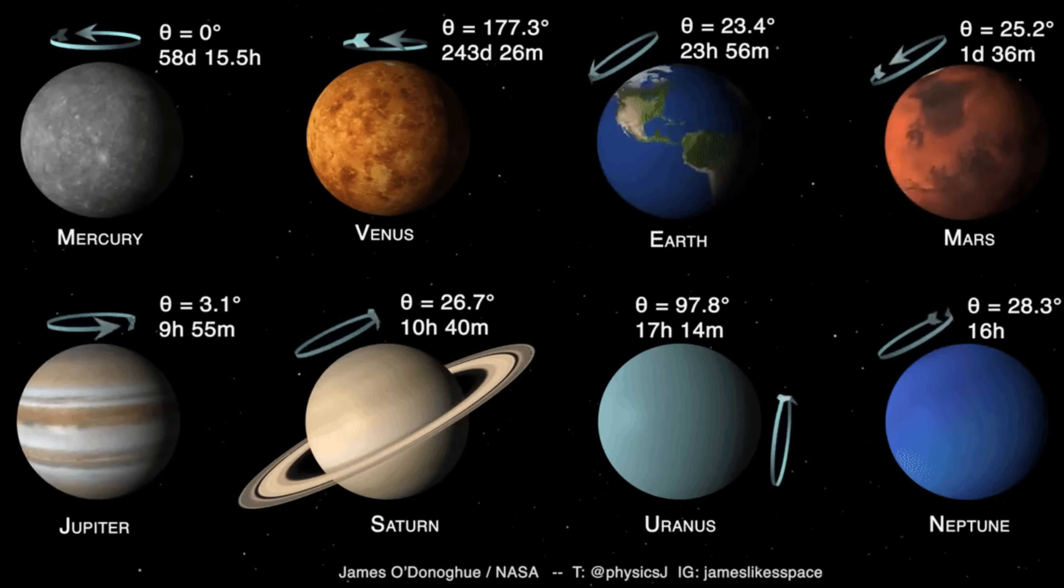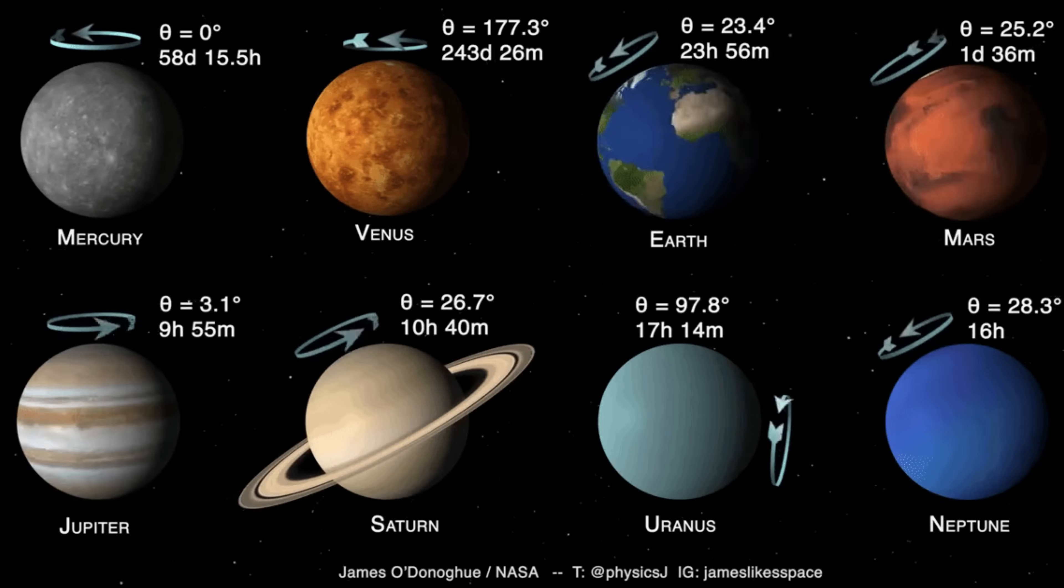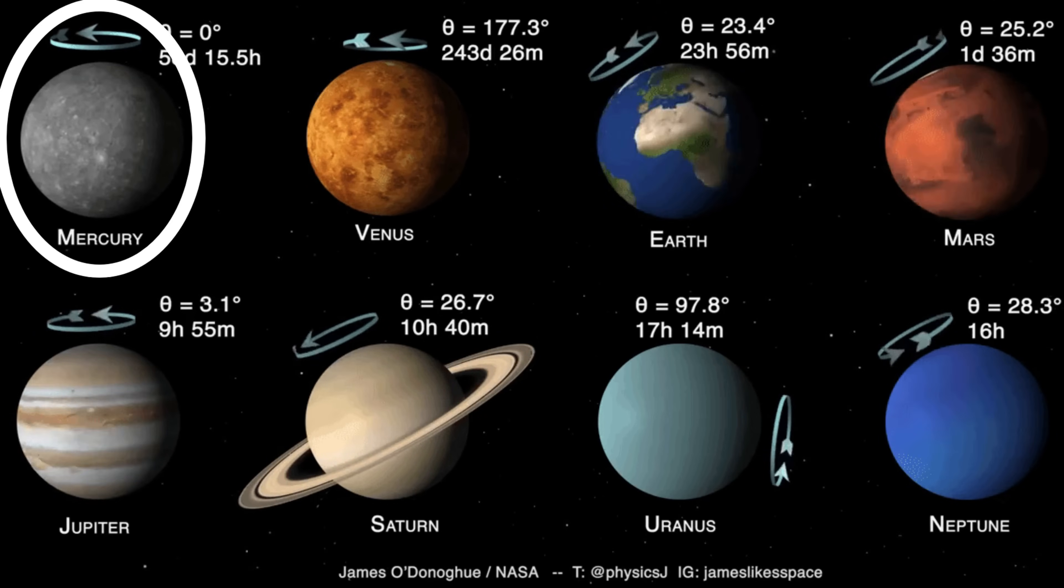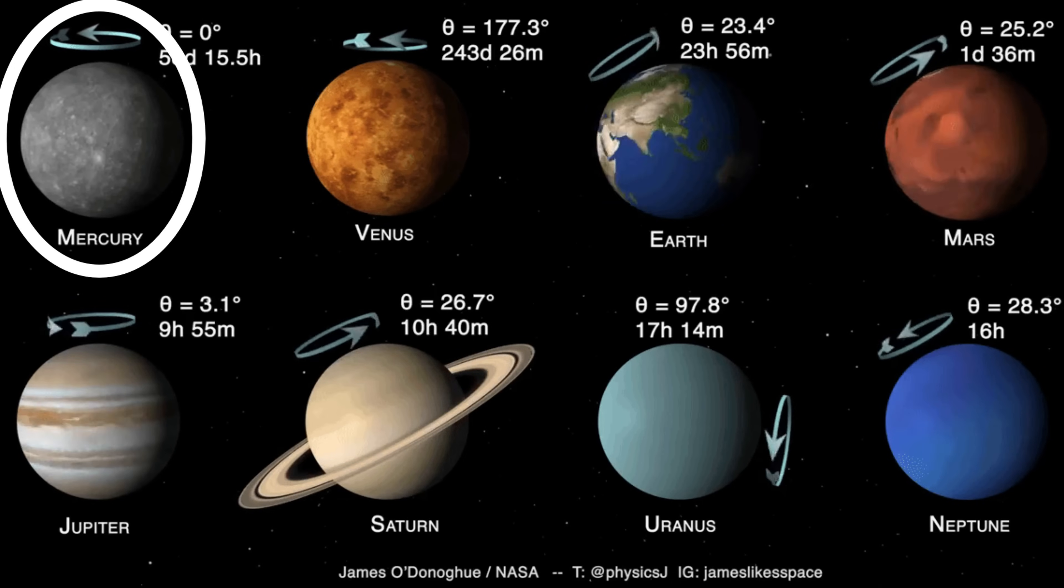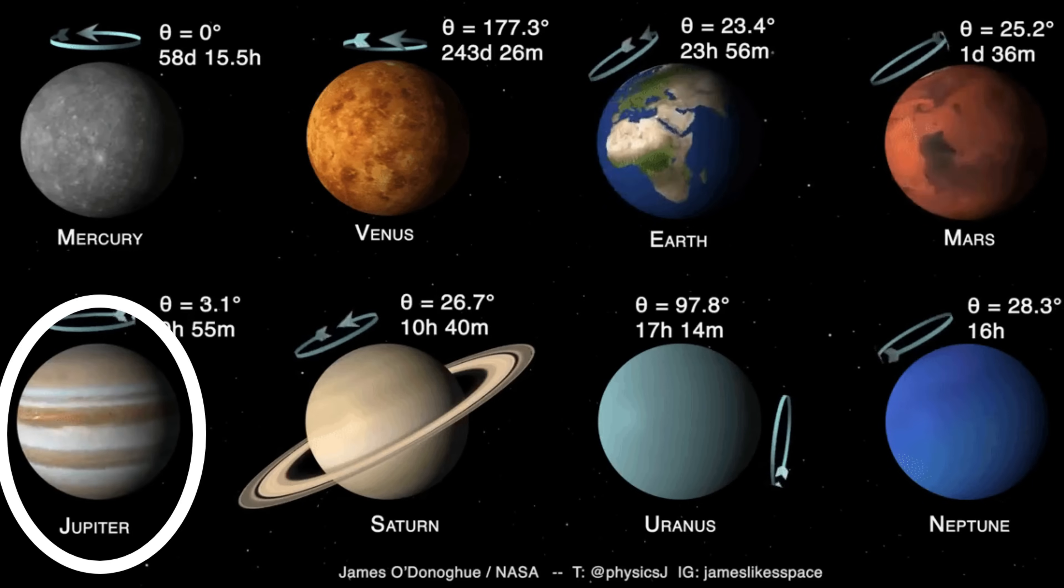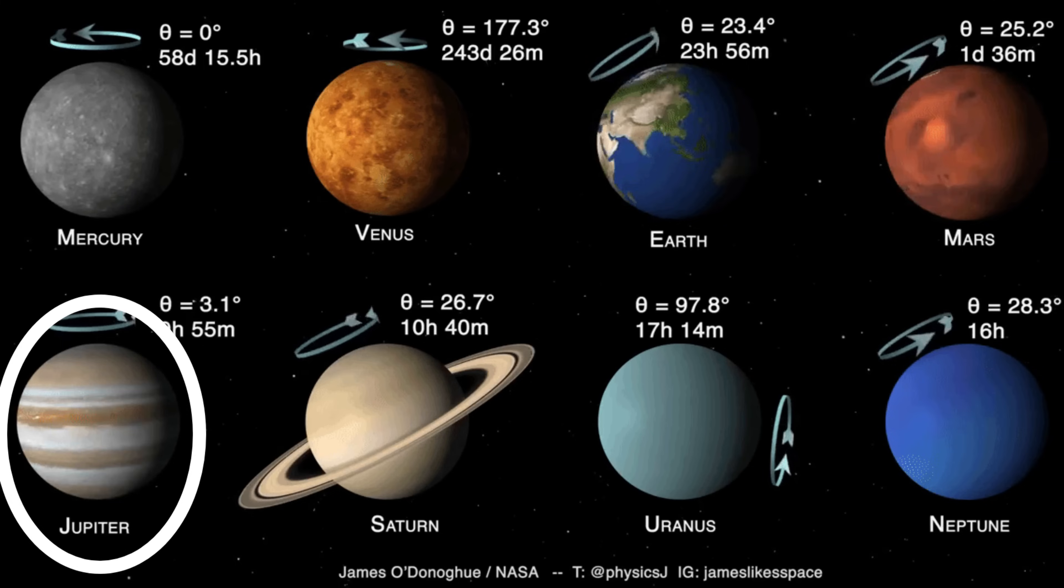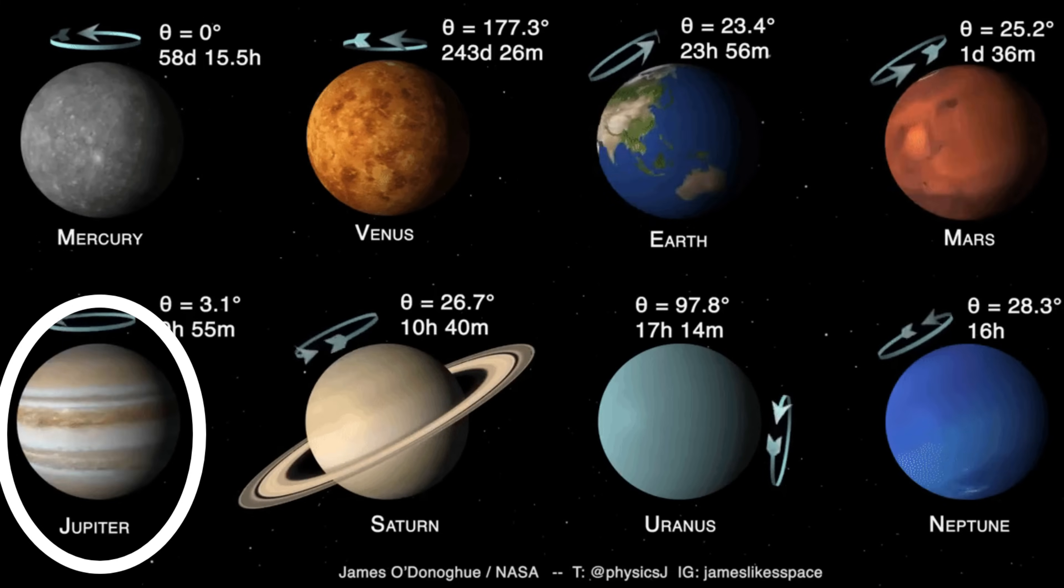Other planets have shorter and longer days than Earth. One day on Mercury takes 58 Earth days, because Mercury rotates on its axis very slowly. Jupiter's rotation is much faster, clocking in at about one Jupiter day for every 10 Earth hours.